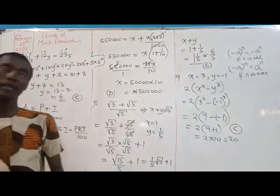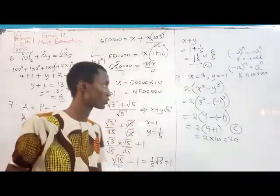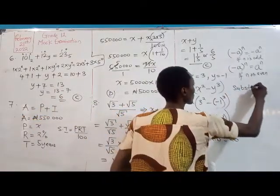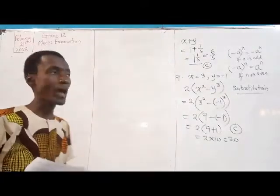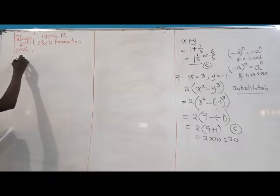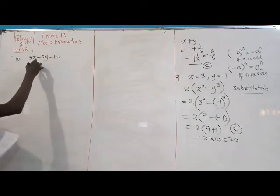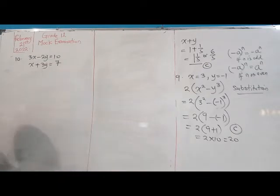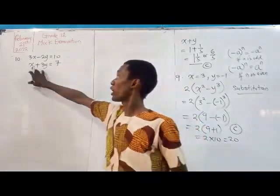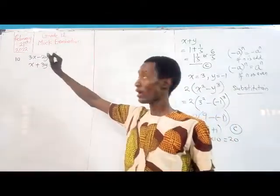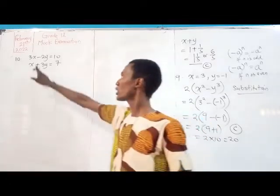Take note of the principles — this concept tests substitution. Question ten: solve the simultaneous equations 3x - 2y = 10 and x + 3y = 7. Nothing can be directly eliminated by inspection, so we use LCM. The LCM of the x-coefficients (3 and 1) is 3; the LCM of the y-coefficients (2 and 3) is 6. We eliminate the term with the lowest LCM.